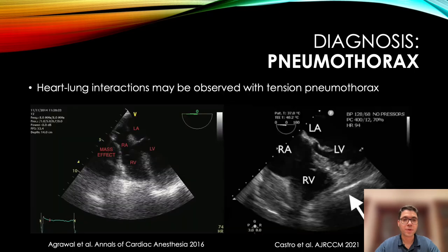With tension pneumothoraces, heart-lung interactions may be observed. More specifically, one can sometimes observe a mass effect causing compression of the right atrium and the right ventricle, and in this case of the right ventricular apex.